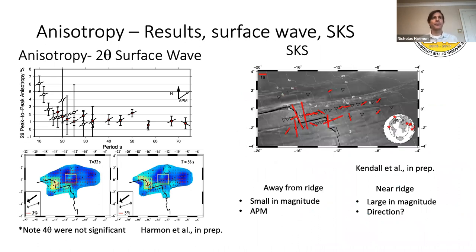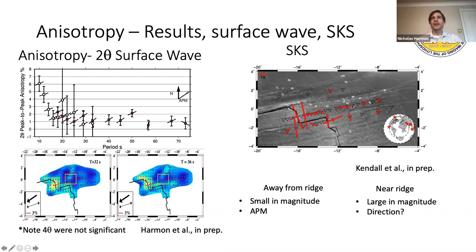We can also compare surface wave anisotropy results to SKS splitting. Near the ridge we actually have quite strong anisotropy — about three seconds of splitting in the SKS within 50 to 100 km of the ridge. As we get further and further away, the fast direction of the SKS splitting rotates into the spreading or absolute plate motion direction. The SKS splitting is about half a second to one second further off axis, which is significantly weaker than what was observed at the ultra-fast spreading East Pacific Rise, suggesting something about the anisotropy structure with depth is different here.